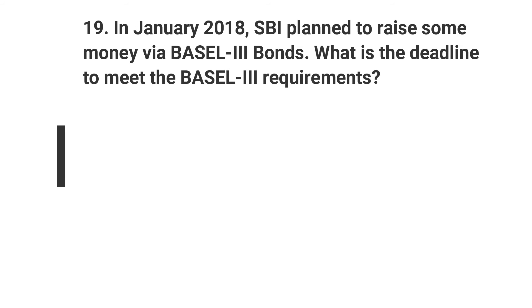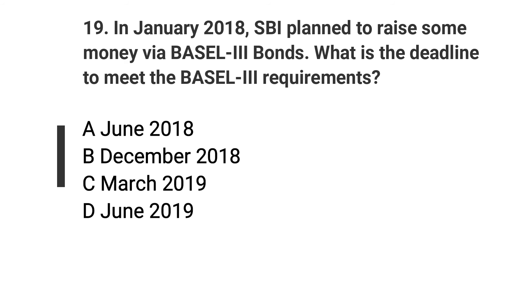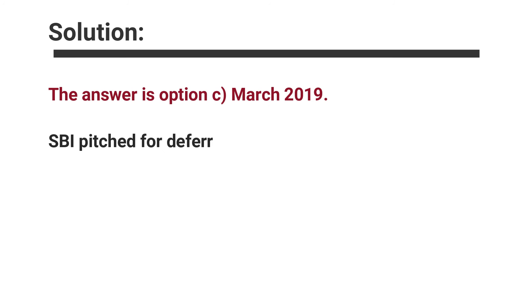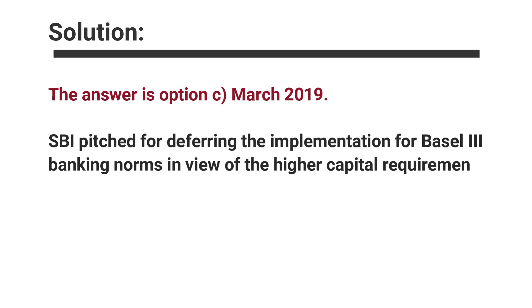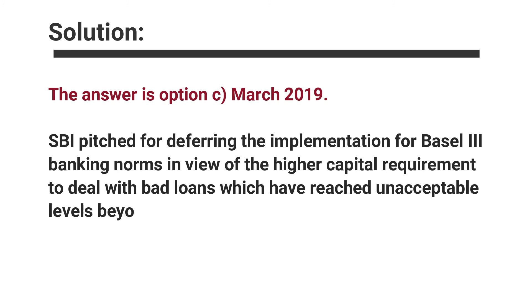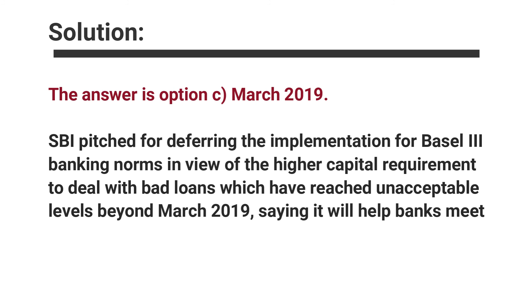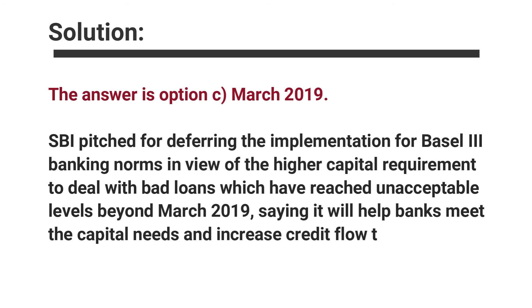Question number nineteen: In January 2018, SBI planned to raise money via Basel III bonds. What is the deadline to meet the Basel III requirements? Options are A. June 2018, B. December 2018, C. March 2019, D. June 2019. The answer is option C, March 2019. SBI pushed for deferring the implementation of Basel III banking norms in view of higher capital requirements to deal with bad loans, which had reached unacceptable levels, with the deadline set beyond March 2019, saying it will help banks meet capital needs and increase credit flow.